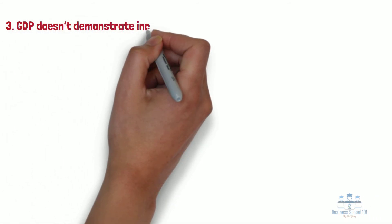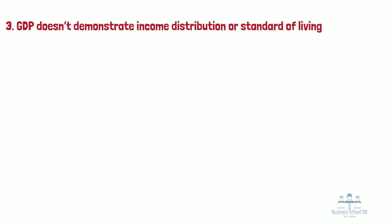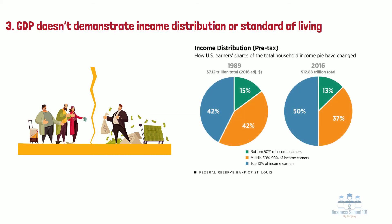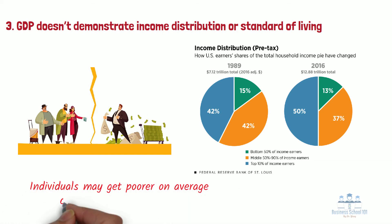Third, GDP doesn't demonstrate income distribution or standard of living. GDP growth doesn't tell us how income is split across a population. Rising GDP could result from the rich getting richer rather than everyone becoming better off. In other words, a disproportionate share of a nation's income can be earned by a small minority of households. For example, when the top 10% of households earn 80% of the total income in a country, there is a high degree of income inequality. Additionally, just because GDP is increasing doesn't mean that a citizen's standard of living is improving. If a country's population increases, then GDP will grow because with more people, more money will be spent. However, the individuals within that country might not be getting richer — in fact, they may be getting poorer on average even while GDP goes up.